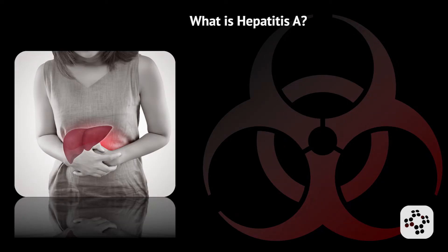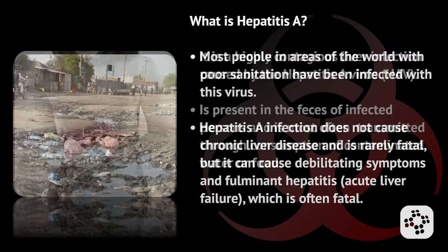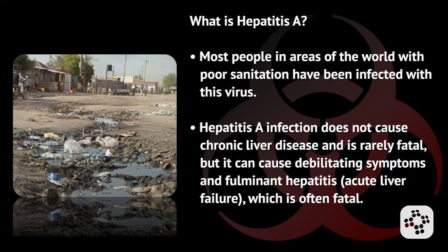Now let's take a closer look at Hepatitis A. Hepatitis A is a highly contagious liver infection caused by Hepatitis A virus, known as HAV. It's present in the feces of infected persons and is most often transmitted through consumption of contaminated water or food. Most people in areas of the world with poor sanitation have been infected with this virus. Hepatitis A infection does not cause chronic liver disease and is rarely fatal, but it can cause debilitating symptoms and fulminant hepatitis, which is acute liver failure, which is often fatal.